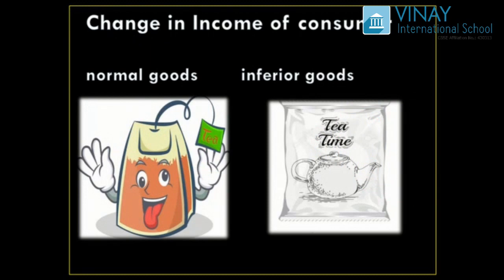Moving forward — I used to use loose tea leaves in normal packets. But when my income increased, I could spend a little more, so I switched to tea bags. So when income is lower, tea leaves were my normal goods; and when income rose, the tea leaves became inferior goods — because I moved to a better alternative, the tea bags. So income also has an effect on demand.